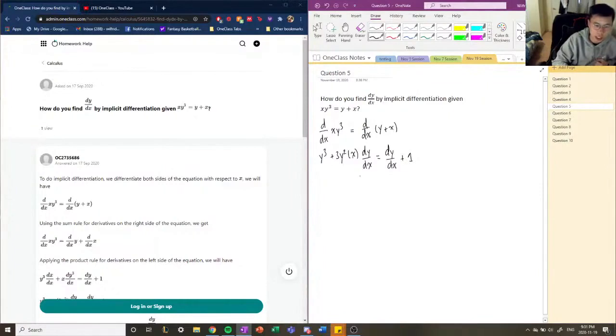So now we're going to isolate for dy/dx, so we're going to move dy/dx to the left side and everything else on the right side. So we have 3y squared x dy/dx minus dy/dx.